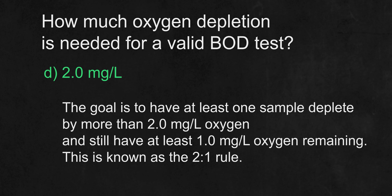The answer is D — 2.0 mg per liter. BOD, meaning biochemical oxygen demand, is a common lab test which determines the strength of the wastewater and takes 5 days to complete. Every time this test is run, the dissolved oxygen level must deplete by more than 2 mg per liter from when it started. It is also important to know that 1 mg per liter of oxygen has to remain after 5 days for the test to be deemed accurate. This is called the 2-to-1 rule.